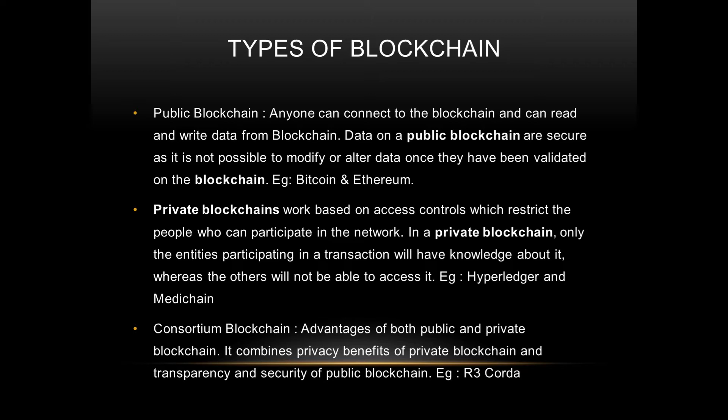It is basically a trustless system where trust is achieved from untrusted nodes through consensus. Examples include Bitcoin and Ethereum, which are both permissionless blockchains. Private blockchains, or permissioned blockchains, are used within an organization. The identity of every person is known, and only registered participants can do transactions and read or write data. You don't need a very high consensus mechanism because all nodes are trusted.